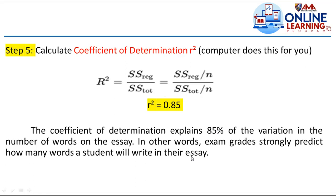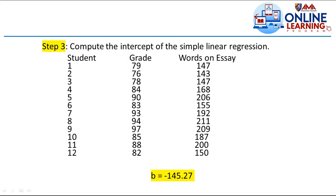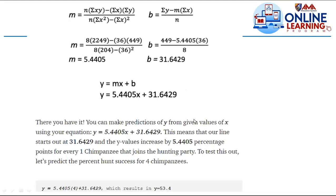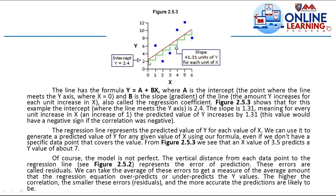If a person's grade is high, they are predicted to write more words — it is directly proportional. As grades increase, the number of words in the essay increases linearly. For example, if the grade goes from 90 to 95, the essay word count increases by 85% of that increment. The increase is linear, which is why it is called linear regression.